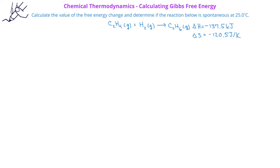In a previous video, we learned that we could calculate the free energy change for a system or reaction based on the enthalpy and entropy change for that reaction. In this example, we're asked to determine if a particular reaction is spontaneous at 25 degrees Celsius, and also to calculate the free energy change for this reaction.